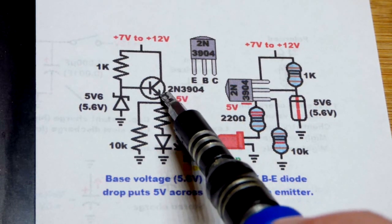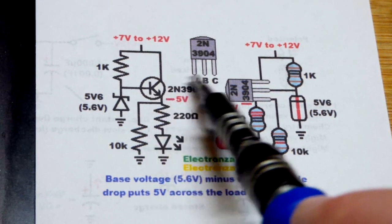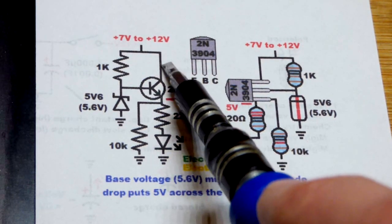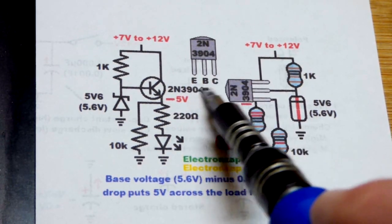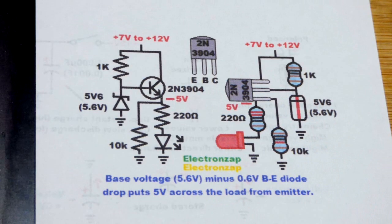And the emitter is the arrow. The base is the bar over there. And then the collector is on top right there. So we're going to use the 2N3904. And that's the pin layout when you're looking at the flat side.